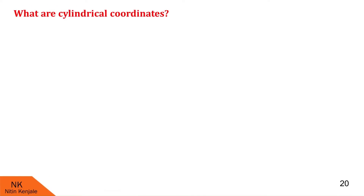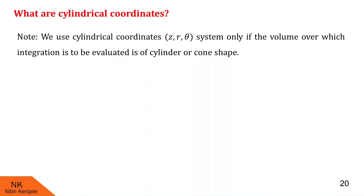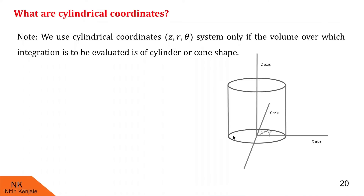Here we discuss what cylindrical coordinates are. Note that whenever the volume over which the integration is to be evaluated is of the type cylinder or cone, then only we are going to use the cylindrical coordinate system, which consists of coordinates Z, R, and Theta. In a cylinder, we need mainly the Z axis, the radius, and Theta.